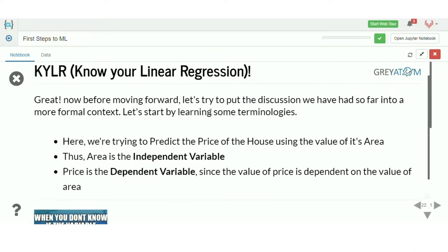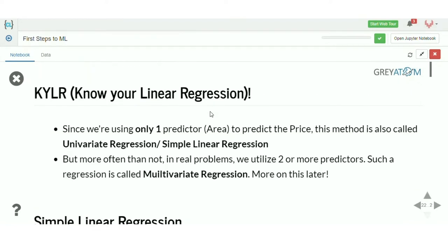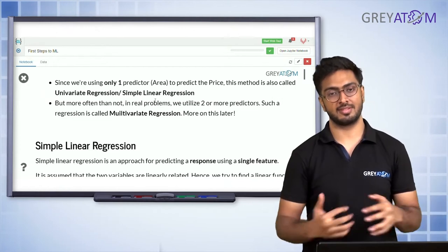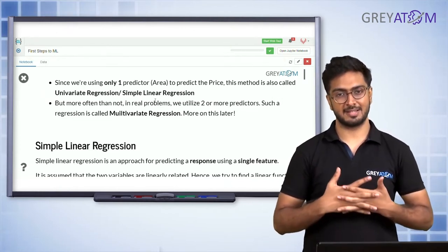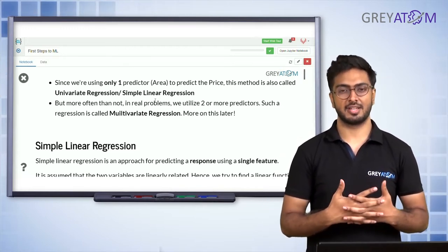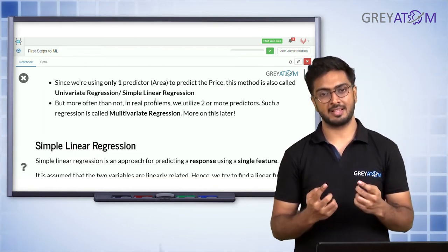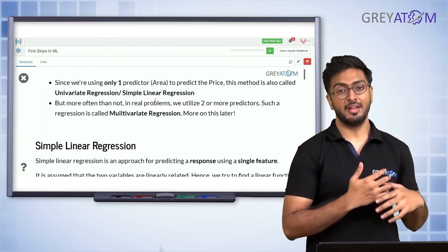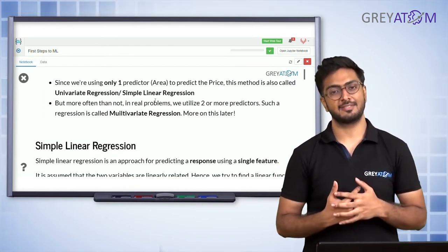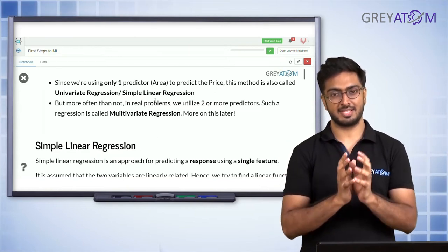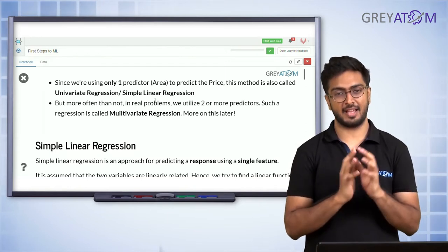The area is the independent variable and the price is the dependent variable. Since we are only using one feature — one independent variable — this is called univariate or simple linear regression. Later we will also talk about cases where we have more than one feature. For example, house price is not just dependent on area; it depends on neighborhood, garage area, and many other things. When multiple features are involved, it's called multivariate linear regression.